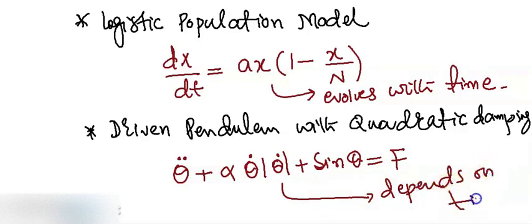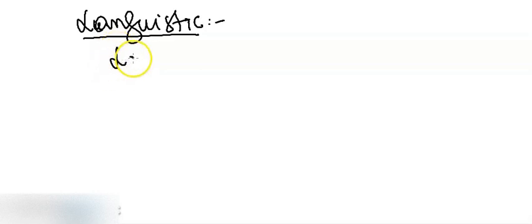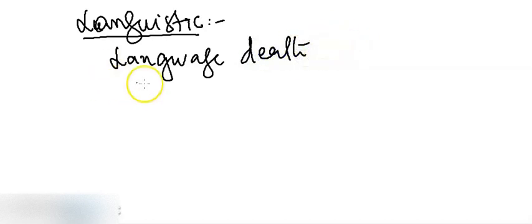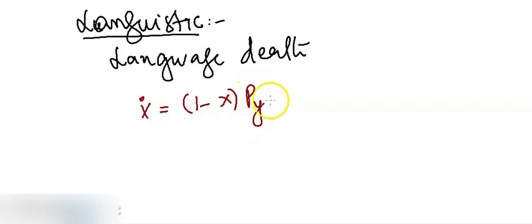This depends on time — we will talk more about these later, this is just motivation. We can also see a few more examples. We are kind of watching dynamical systems in almost all fields. For example, if we talk about linguistics, we have a very famous language death model defined by a differential equation given by x-dot equals 1 minus x times p(y,x) minus p(x,y).